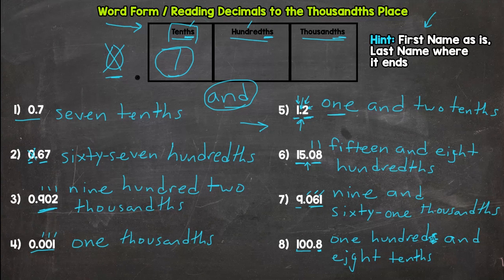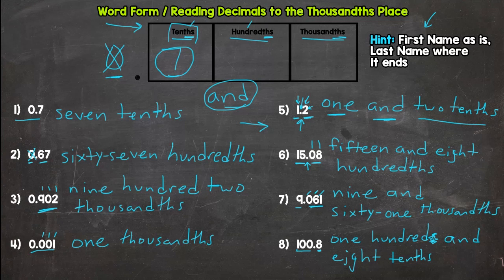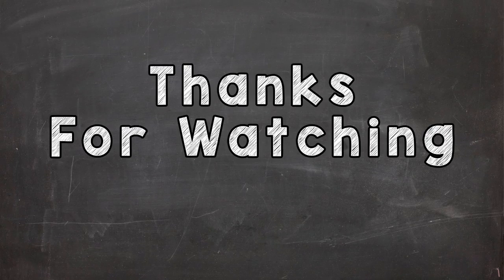To recap: the word 'and' separates the whole number part from the decimal part. For example, in number five, one is the whole number part, and two tenths is the decimal part. If you're new to this, hopefully that's a good start. If this is review, hopefully it refreshes your memory. You can now choose: if you're confident, try the practice video and see if you've mastered the concept. If you need more instruction, check out part two where we'll do eight more examples, and then try the practice on your own.